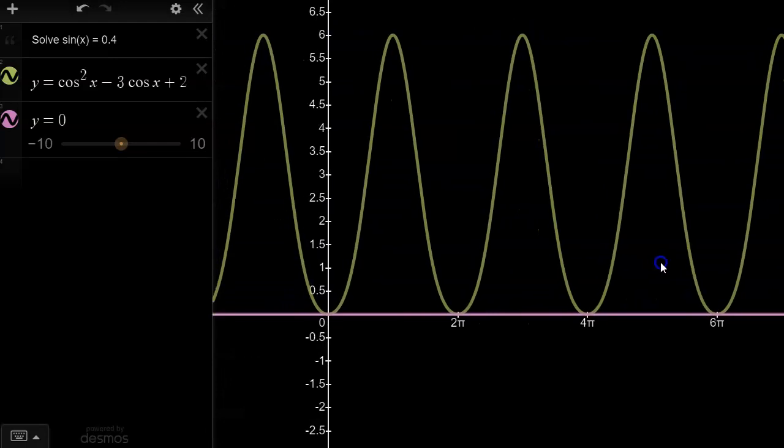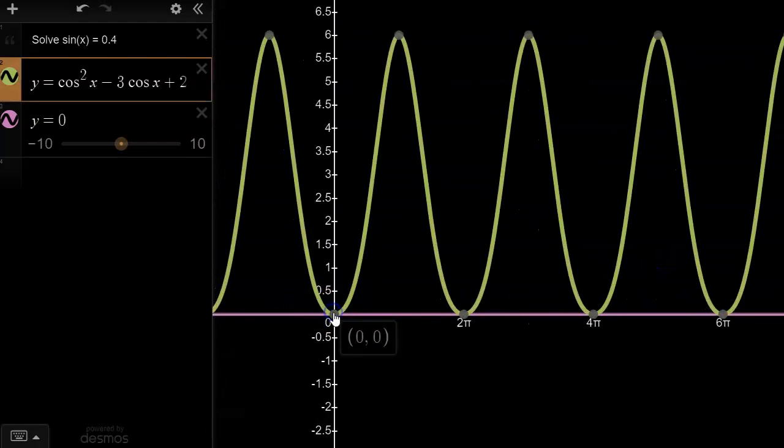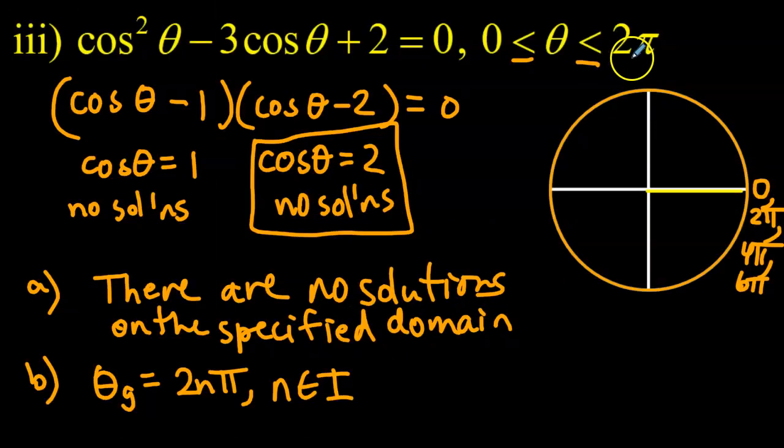Now, if you look at these values here, I mean, we have the roots at exactly 0 and 2π, and since the domain, the specified domain, did not allow for 0 or 2π, we can't include those as solutions. So there were no solutions for part A.